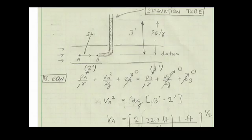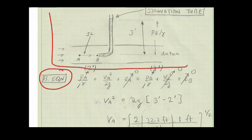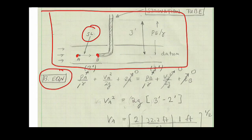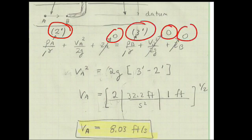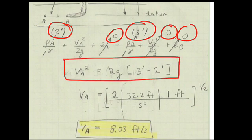To calculate the velocity, I apply the Bernoulli equation. I make my system diagram as usual, sketch the streamline, and identify points A and B. I write the general form of the Bernoulli equation and do a term-by-term analysis. Here's the reduced equation. Then I substitute numbers in, do the unit grid, and the velocity at A is 8.03 feet per second.